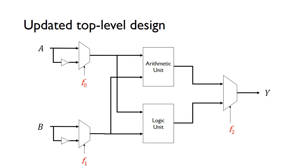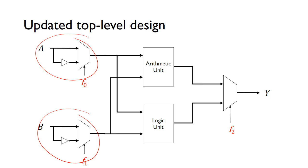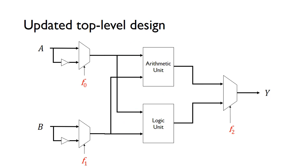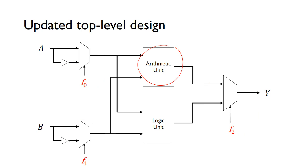Now we can update our top-level design. We have our input inversion circuits on the inputs, so we can now feed either A or NOT A, and either B or NOT B, into each unit. This allows us to do the subtraction operations and the NOT B data movement operation. Now we have three multiplexers, which means we need three different control bits: F0 controls the A input inversion, F1 controls the B input inversion, and F2 selects between the arithmetic operation and the logic operation.